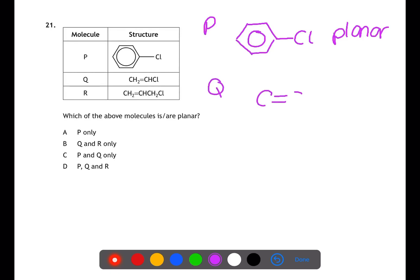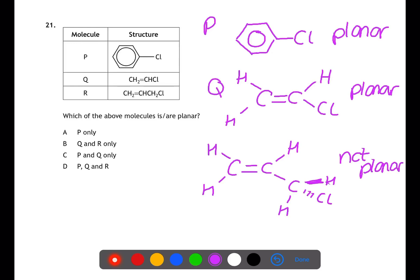This can be seen in P, where we have a benzene ring, with one chlorine attached. In Q, we have a C double bond C with four groups attached. However, these each contain one atom. Therefore, this will be planar. In R, however, we have a C double bond C with sp2 hybridisation. However, one of the groups is a CH2Cl. This carbon will have sp3 hybridisation and will not be planar. This means that both P and Q are planar, but R is not.